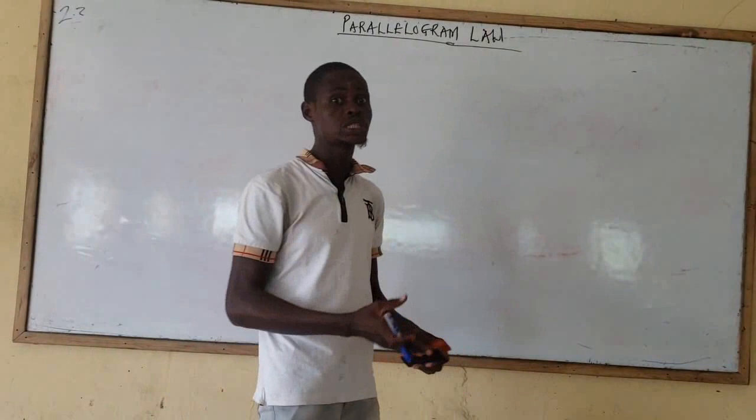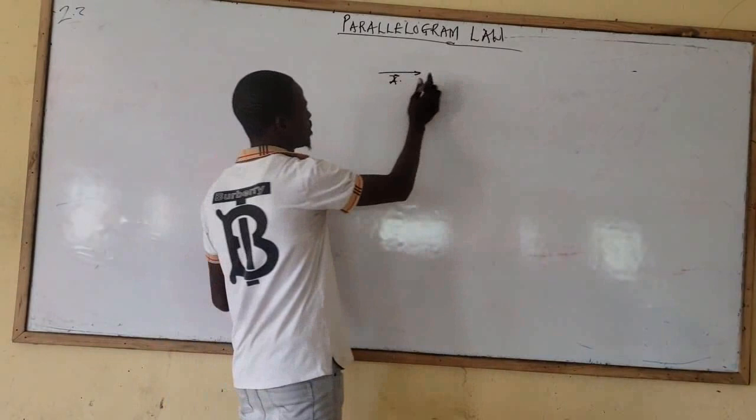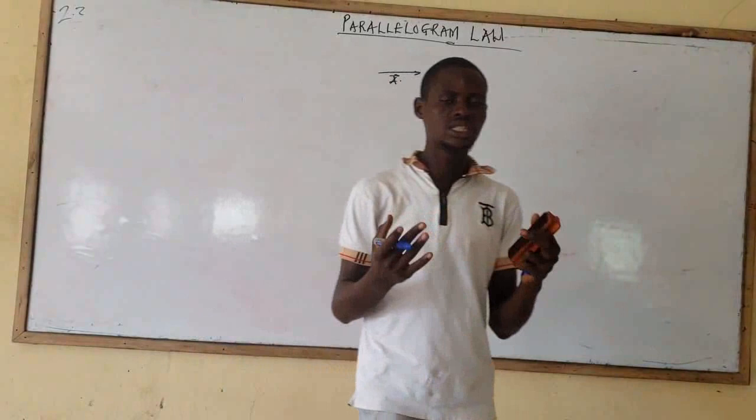Today I want to look at: if I'm given two vectors — let me say this is vector A, which has magnitude and direction — and I have another vector, vector B, but it's acting in a different direction. This is my vector B. Now I want to look at how we can add these two vectors together to get a single vector.